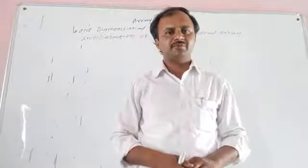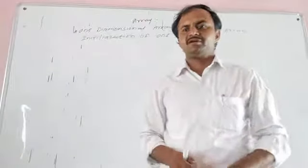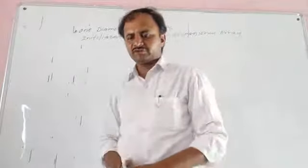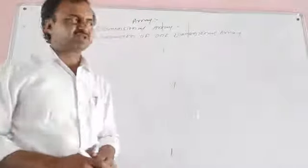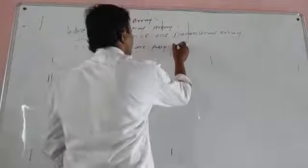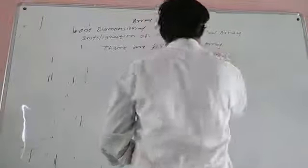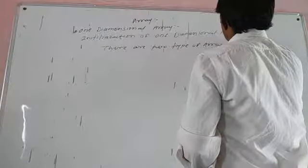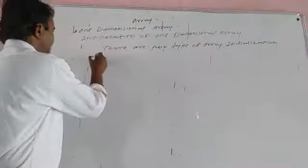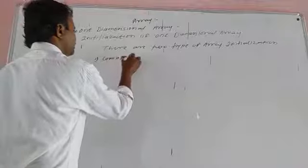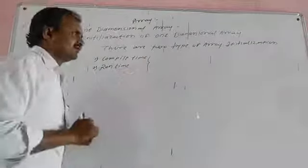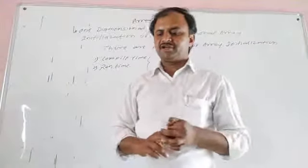If we do not assign the values of a variable, that means it can hold a garbage value — it will hold any type of value. There are two types of array initialization. The first one is compile time, and the second one is runtime initialization.